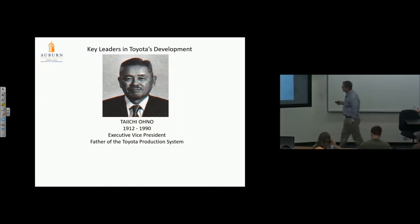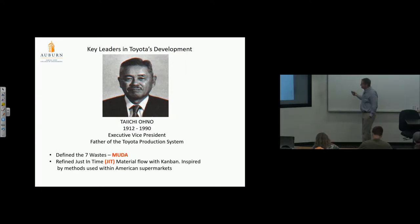Taiichi Ono is the father of the Toyota Production System, defined the seven wastes or muda, refined just-in-time material flow with kanban. Inspired by methods used in American supermarkets—there's debate whether this really happened, but it's a great story. Ono was in an American supermarket, amazed that when someone grabbed a gallon of milk, one would slide back in place.